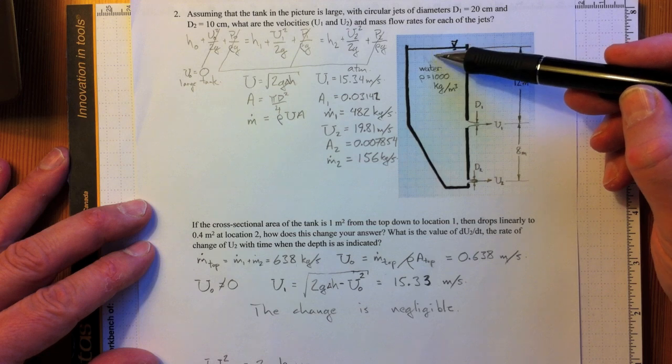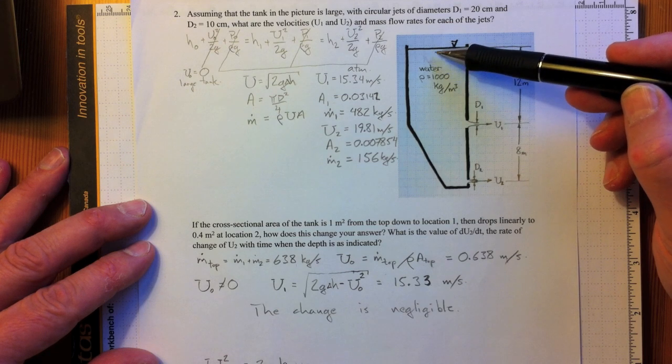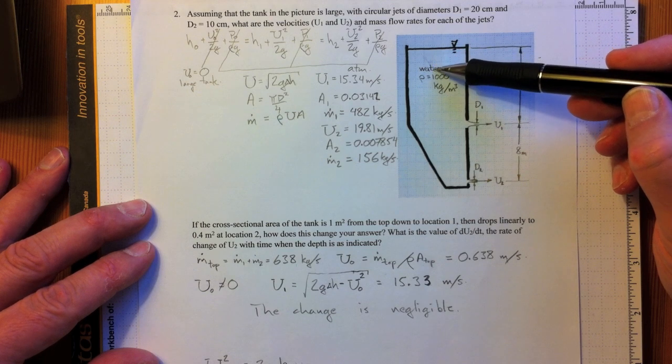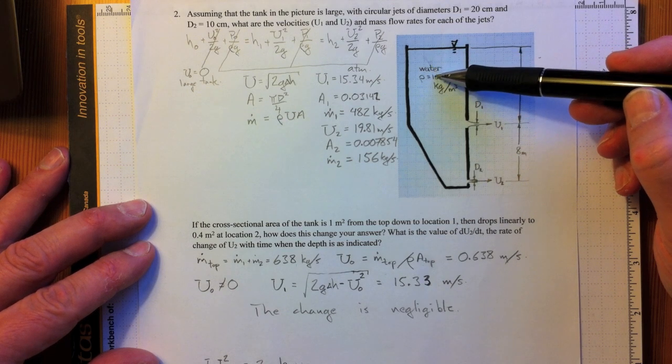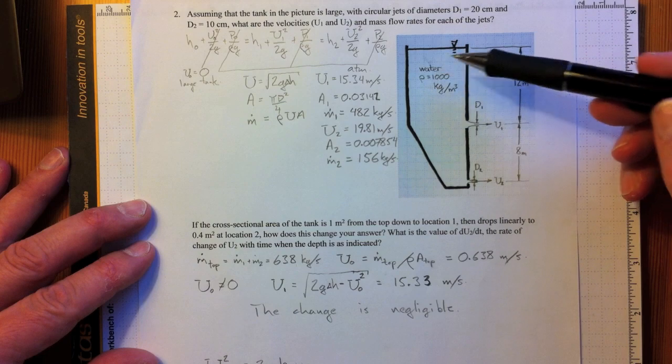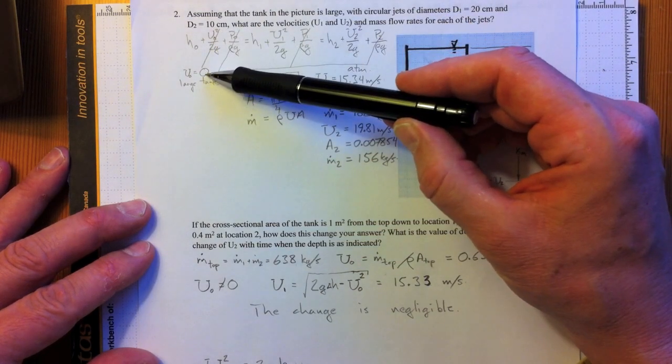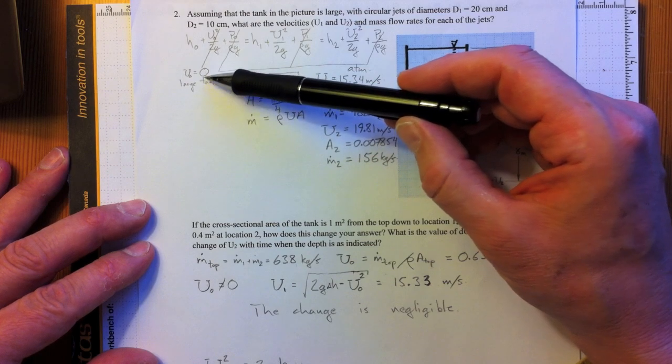That means that's the rate at which this surface is dropping. The surface is moving downwards at more than a half a meter per second. So that's reasonably quickly. That suggests that maybe we can't treat U0 as equal to zero anymore as we assumed here for the large tank.